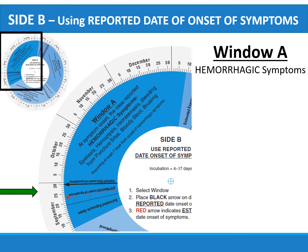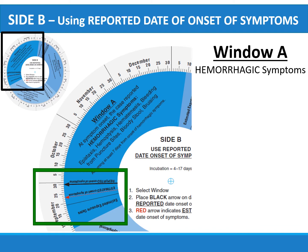If the EVD case under investigation reports hemorrhagic symptoms — like epistaxis or nosebleed, hemoptysis or bloody cough, hematemesis or bloody vomiting, bleeding from puncture sites, bloody stools, or bruising at onset — the wheel subtracts a default value of 7 days from the reported date of symptom onset to calculate the estimated date of onset of symptoms, as hemorrhagic symptoms typically develop at least 6 days after symptoms begin. To use the wheel in Window A, place the black arrow on the date of reported onset of hemorrhagic symptoms. In this presentation, the black arrow is on September 30th, which indicates an estimated symptom onset of September 23rd, and the exposure window is estimated as September 6th to September 19th.